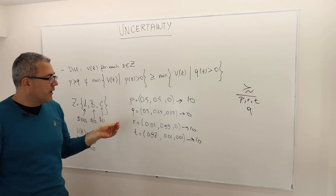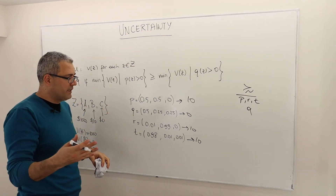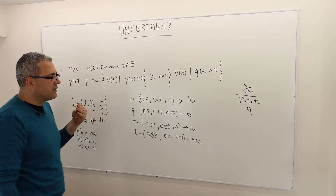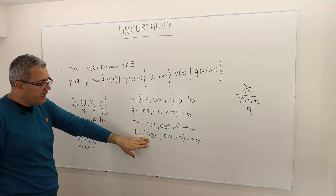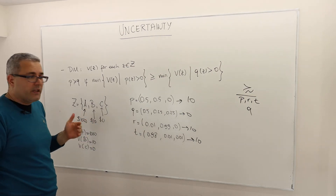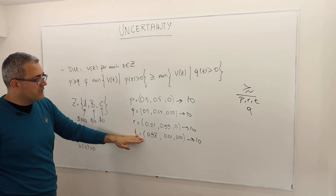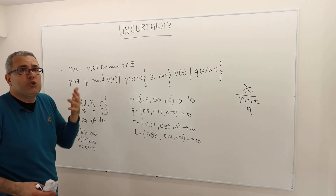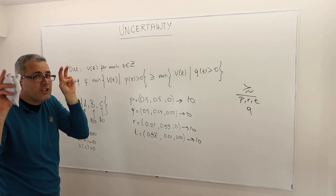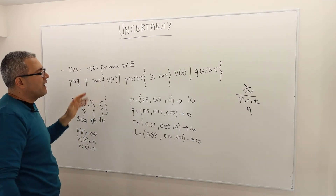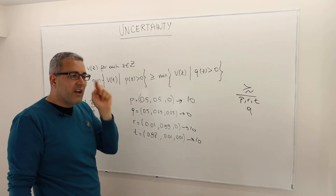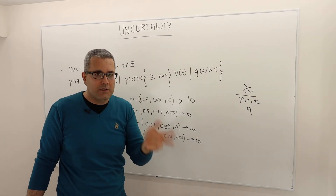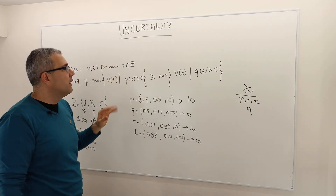Obviously, depending on context, these preferences can make sense. But in this simple case, it doesn't lead to a reasonable scenario. For example, T gives the highest probability to the highest prize ($1,000), so intuitively T should be the best for any rational decision maker. But this decision maker is indifferent between P, R, and T. Remember, rationality doesn't mean more is better — rationality means the choice behavior can be rationalized. And we can rationalize all those preference relations.